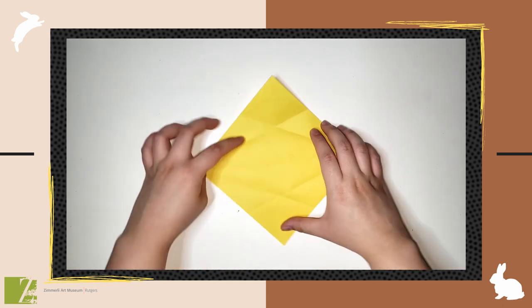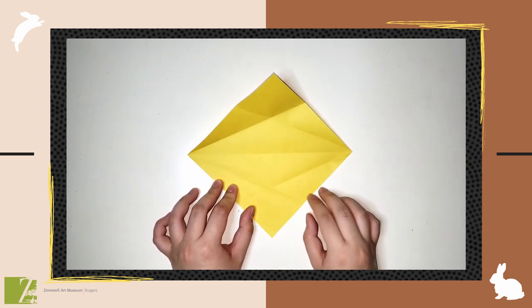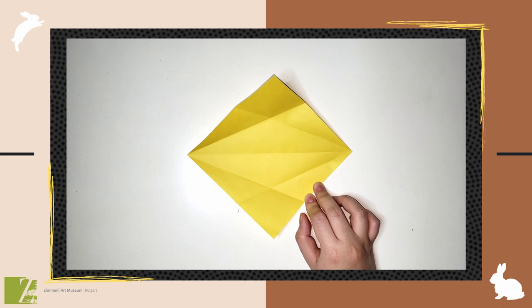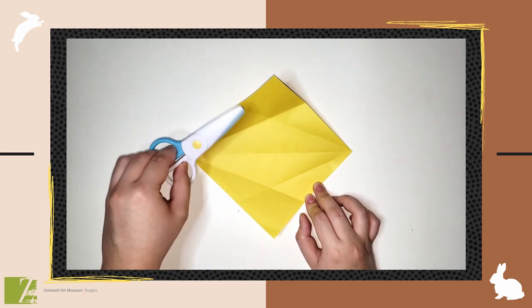Once you're done folding the other side, rotate the paper and you can see the diamond shape we've created. We're going to cut this real quick with scissors. Make sure you don't flip the paper while cutting as it's an important step for later.